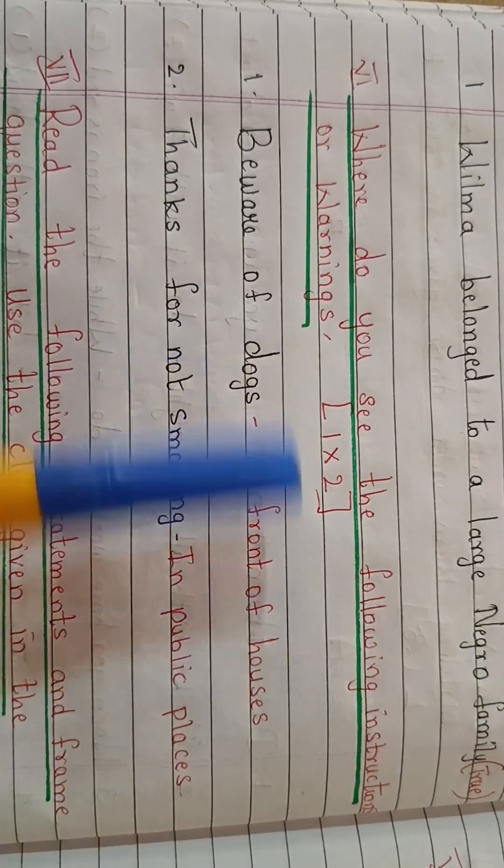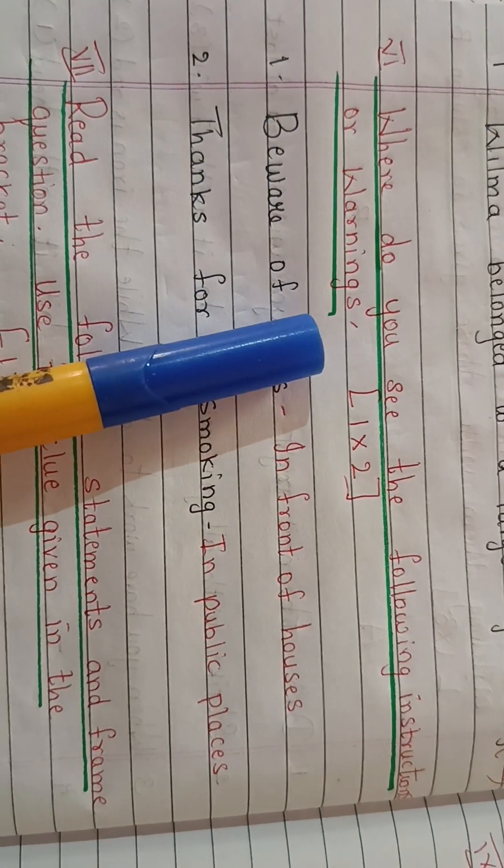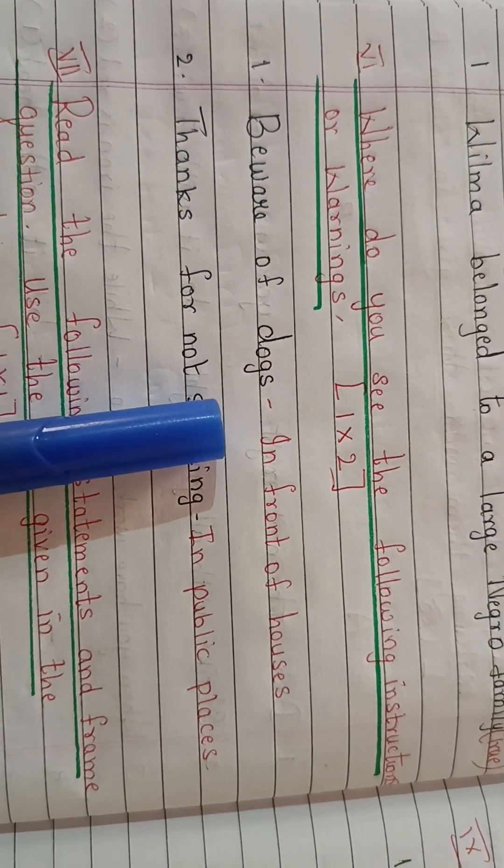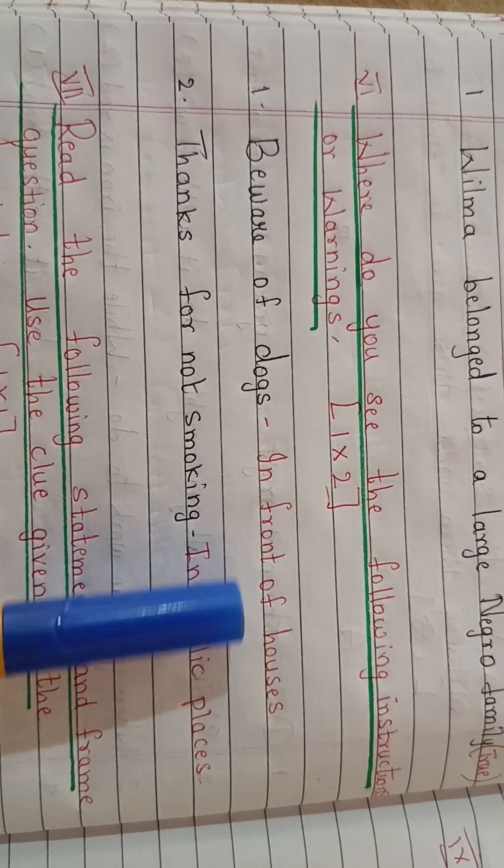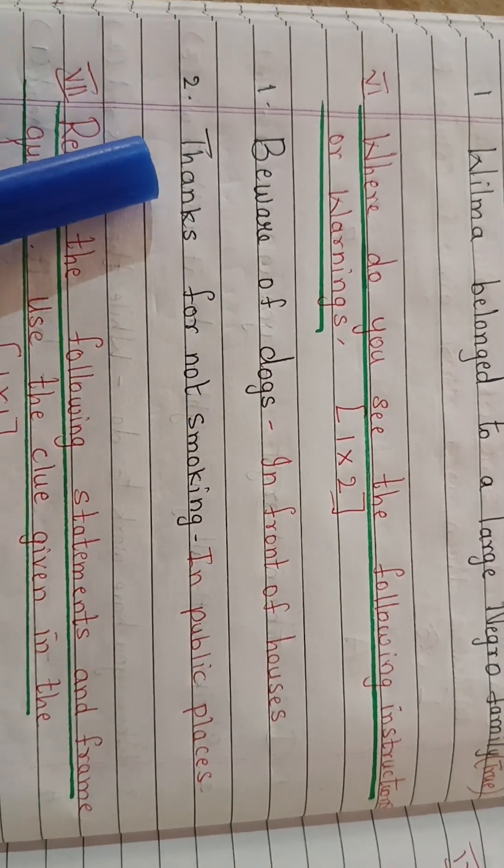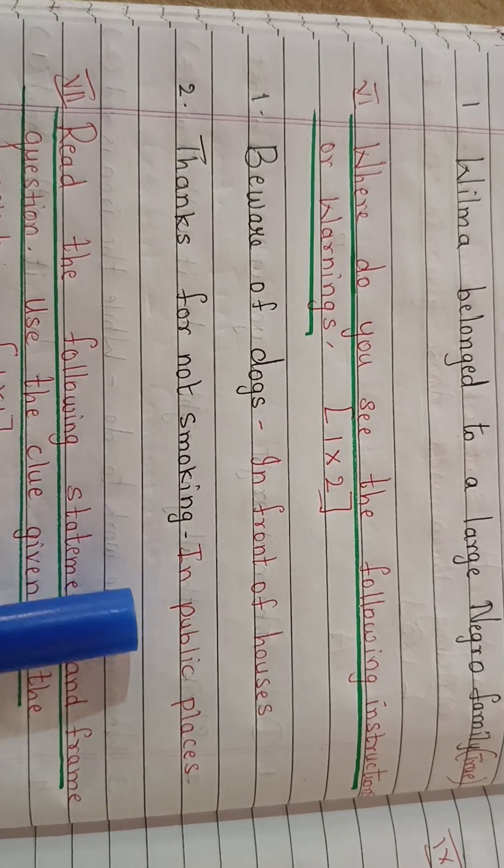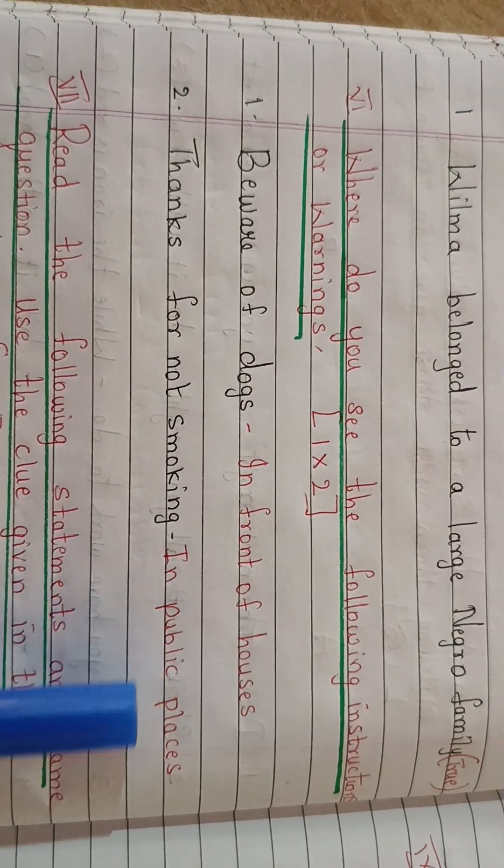Where do you see the following instructions or warnings? So this is for two marks. Beware of dogs. So you find this board in front of the houses. Thanks for not smoking. So this board is found in almost all the public places. So this carries two marks.